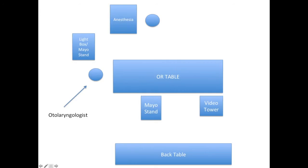The following diagram explains the room layout for the procedure. It is important to note that the operating room table begins with the head towards anesthesia, but then rotates 90 degrees counterclockwise so that the head is with the otolaryngologist.